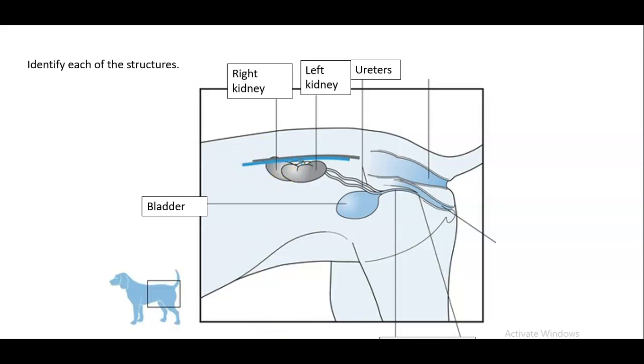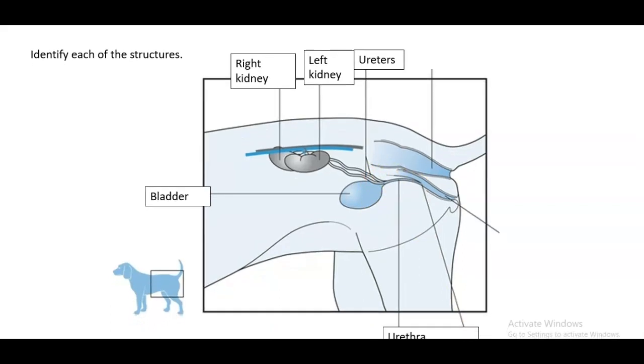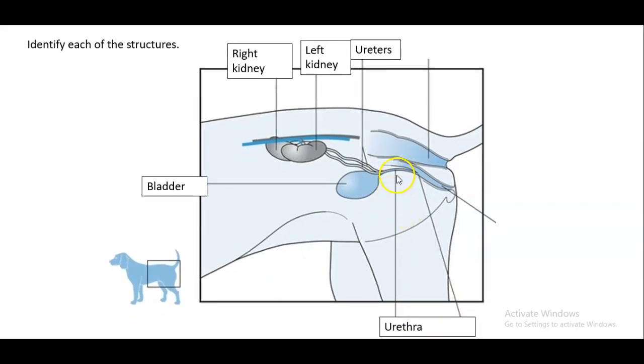And then lastly, we also have the urethra, which I don't know if you guys can see. There we go. We have the urethra, which of course is the tube that brings urine from the bladder out through the penis or the vagina into the outside world.